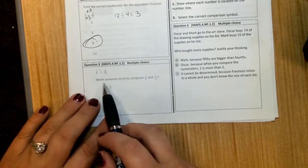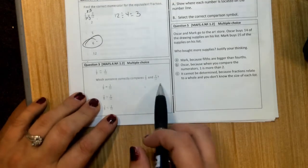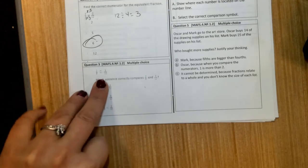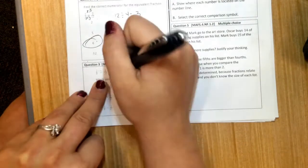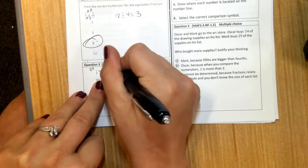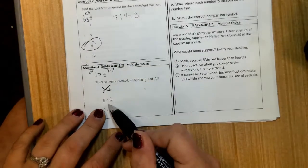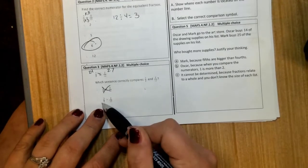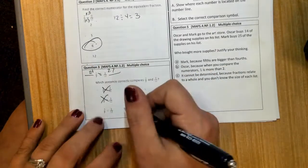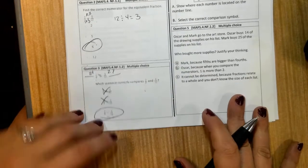Number 3, which sentence correctly compares 2 ninths and 3 twelfths? You can cross-multiply to check this. 2 times 12 is 24, 9 times 3 is 27. So are they equal? No. Is 3 twelfths less than 2 ninths? No, because 27 is bigger than 24. So 2 ninths is going to be less than 3 twelfths.